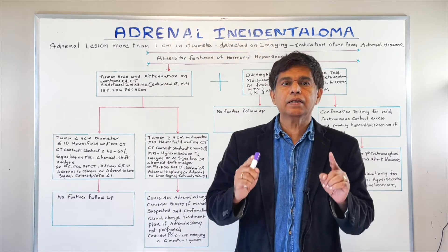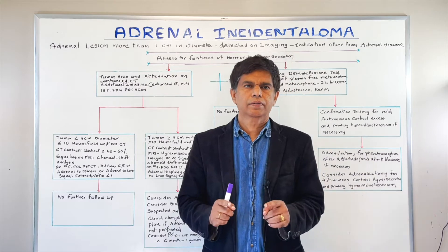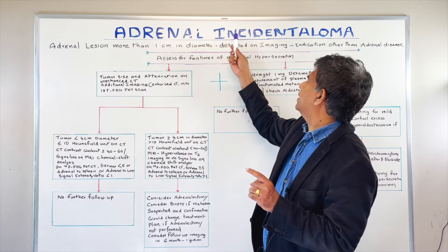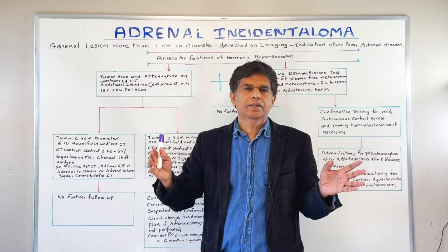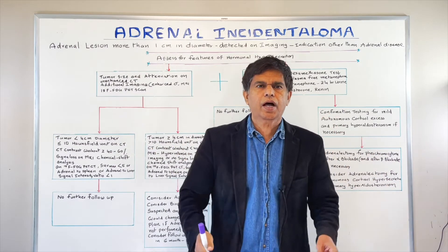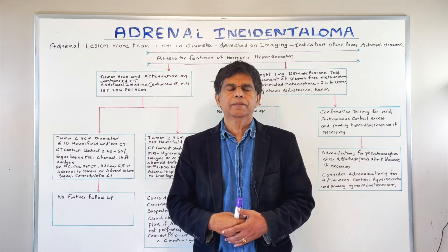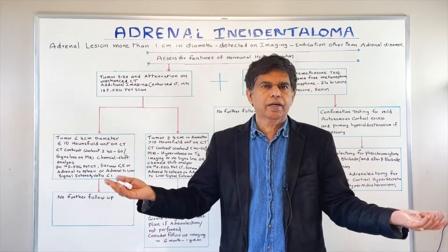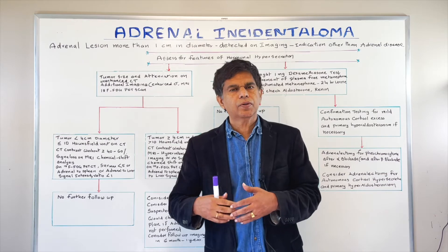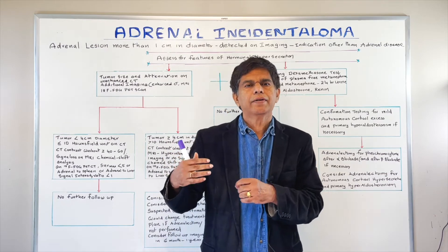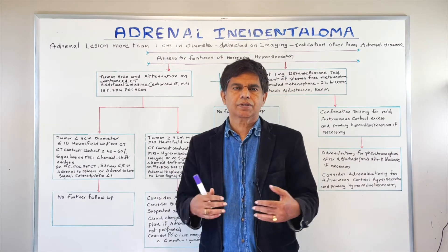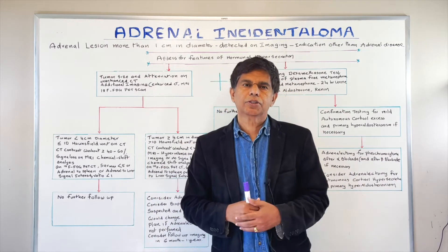The topic today is adrenal incidentaloma. The word I want you to focus on is 'incidentaloma' — it comes from 'incidentally.' Let's say you go into the hospital with abdominal pain, and they find out you have diverticulitis. At the same time, the radiologist reports finding an adrenal mass of one, two, or three centimeters. That's what we call an incidentaloma.